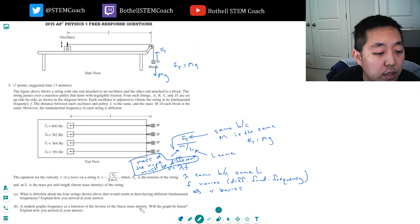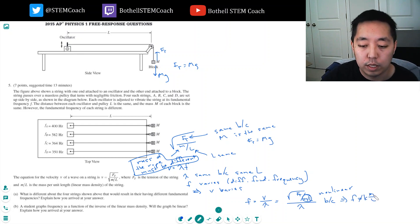A student graphs frequency as a function of the inverse of the linear mass density. Will the graph be linear? Okay, so F, which equals V over lambda, which is equal to the square root of FT over M over L over lambda. This is the linear mass density. This is not a linear relationship between this and this. Non-linear. Because F would have to equal some constant times M over L. And that would be a linear relationship, K times M over L. But it's not.